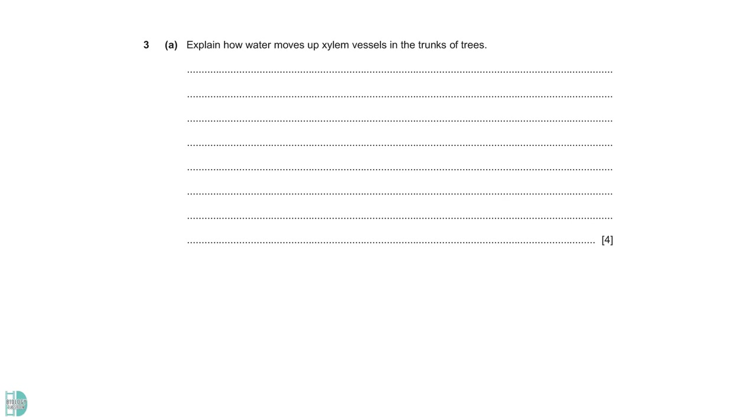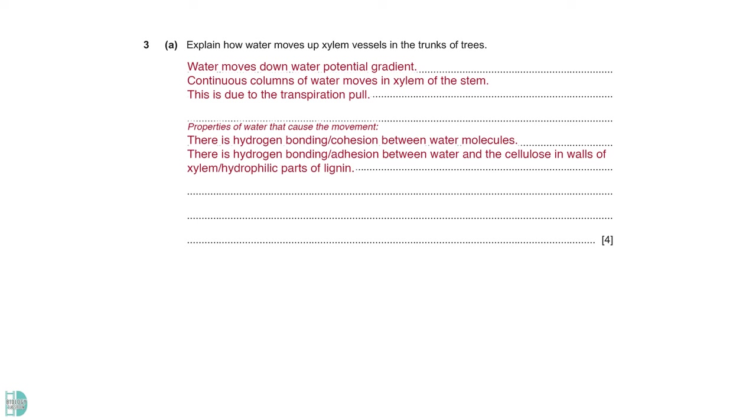Three A, explain how water moves up xylem vessels in the trunks of trees. Firstly, give a general statement to explain why water moves. It is because of the water potential gradient. Then state that it moves as a continuous column in the xylem vessel. This continuous movement is due to the transpiration pull. After that, link the properties of water to this movement. It is due to the hydrogen bonds between the water molecules and the hydrogen bonds between water molecules and the cellulose wall of xylem vessel. You can also use the term cohesion and adhesion, but do not just state the term without any elaboration.